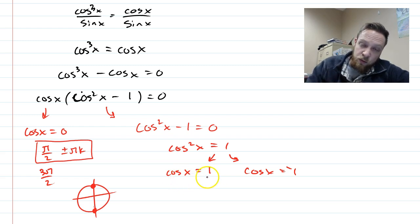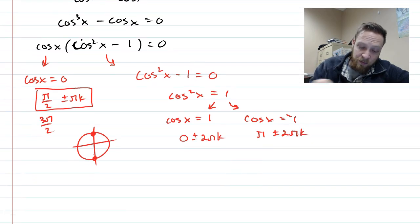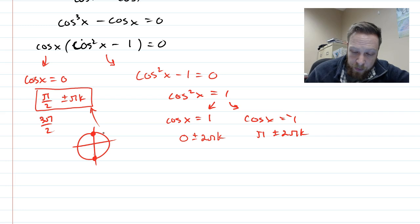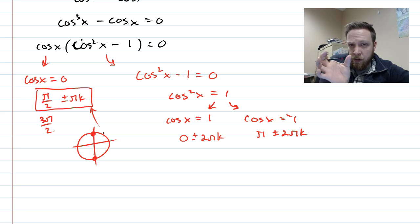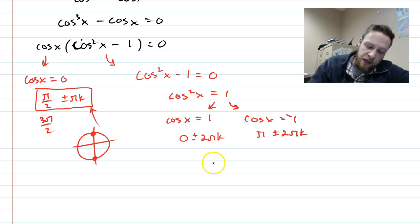Alright, so when is cosine of x 1? That is at 0, plus or minus 2 pi k. When is cosine of x negative 1? That is at pi, plus or minus 2 pi k. Now, this also does the same thing we were talking about back here. We notice that 0 and pi, they're on the opposite sides of the circle. And so instead of including both, we could just write it as 0, plus or minus pi k.